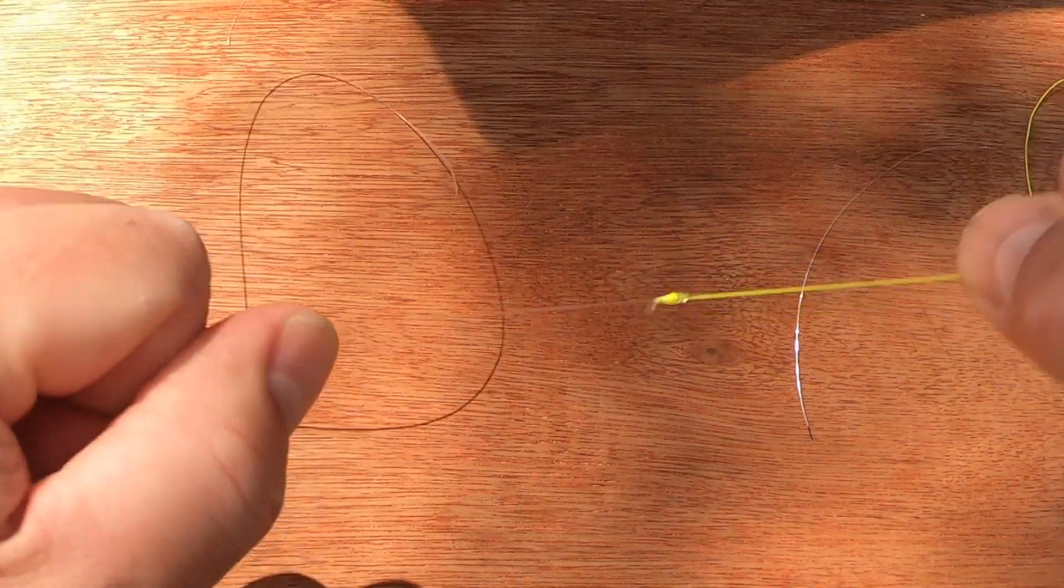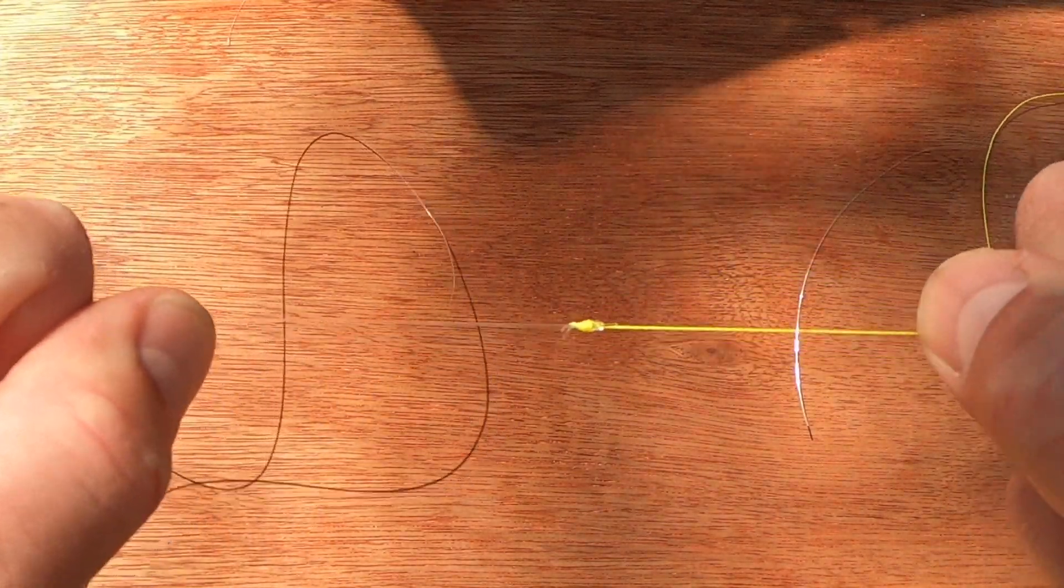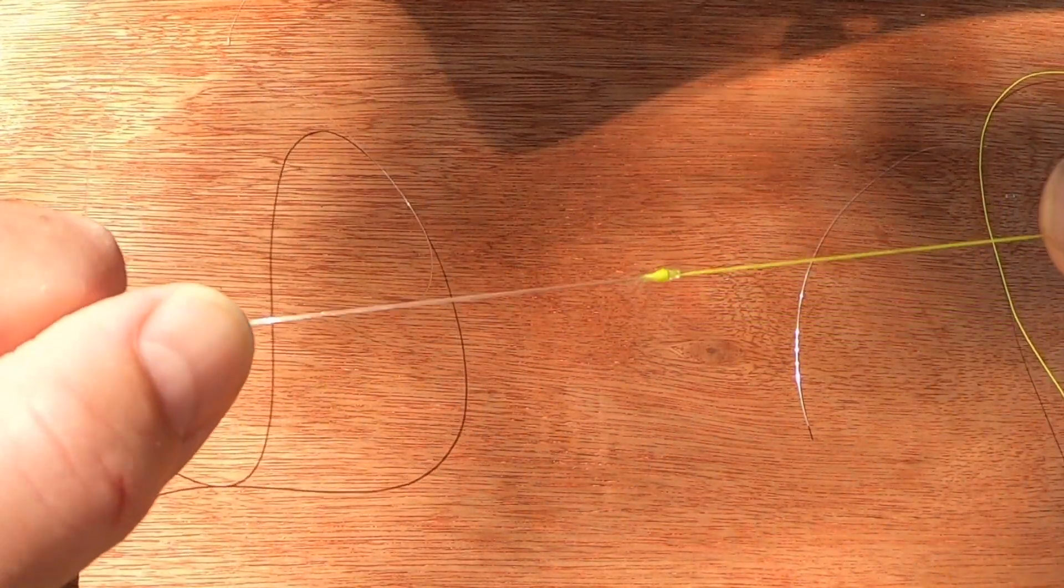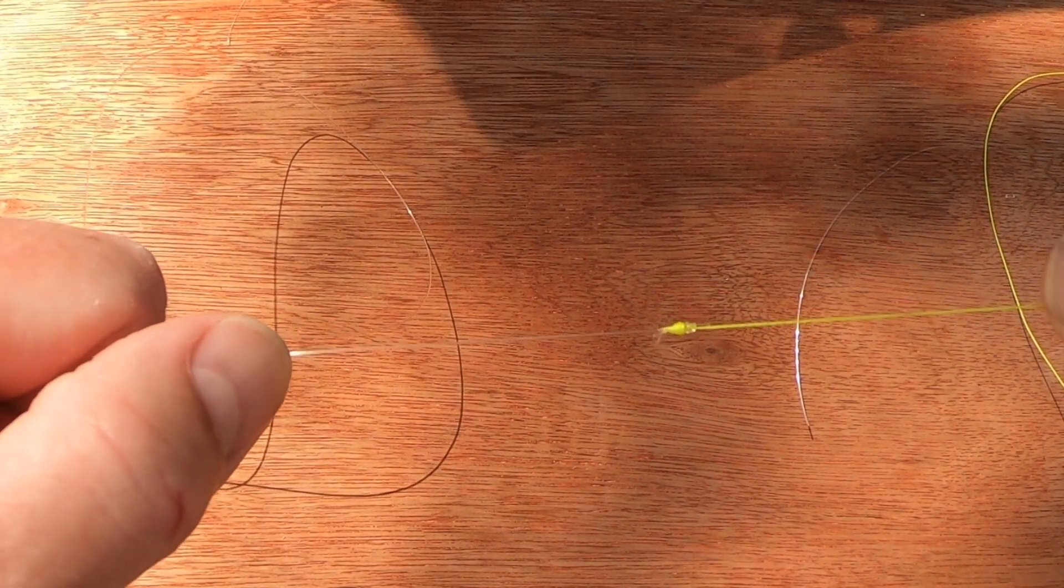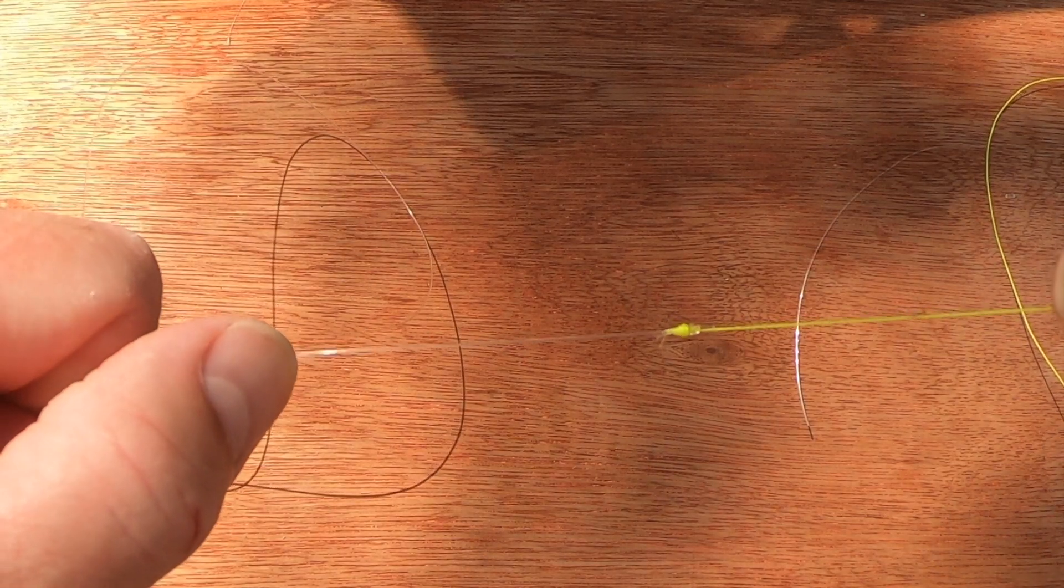I haven't got a sharp piece of scissors but there we go. So there you're left with a good strong knot, and I can't pull that apart, a good strong knot.